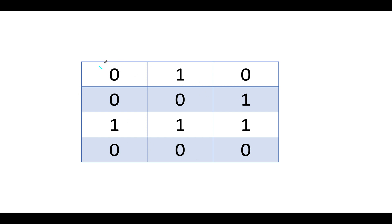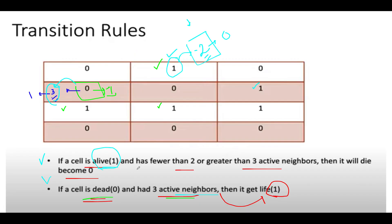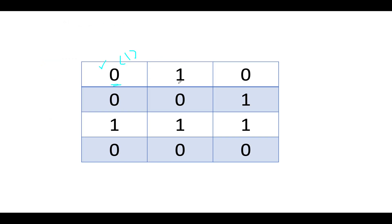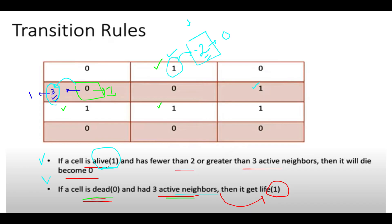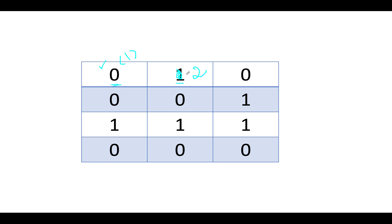Let's apply these rules to the example. Starting iteration: we see zero, and the number of active neighbors turns out to be one, so this cell will not be updated — none of the rules apply. Next we see one. The number of active neighbors turns out to be one, which falls under the first category: the cell is active and has fewer than two active neighbors, it will die. So let's update the state to minus two.